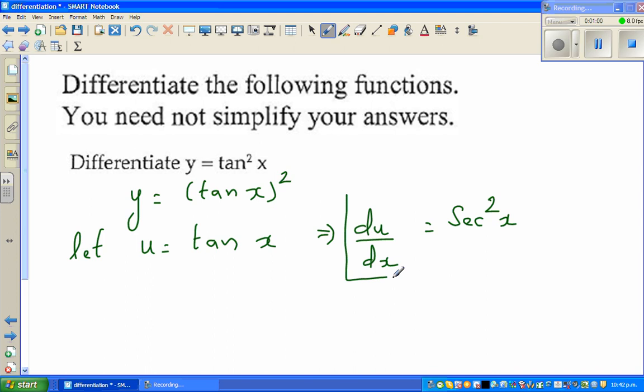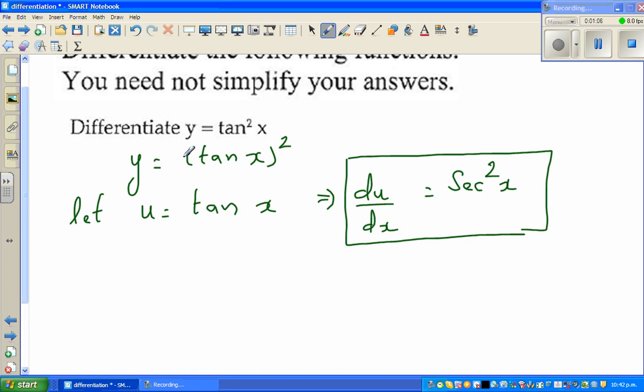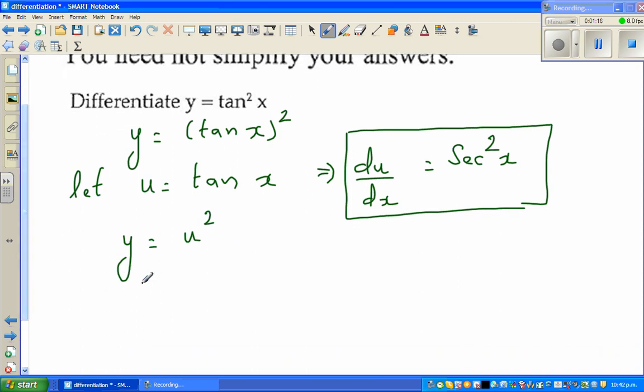I'll keep this away to be used later. Now your function has changed, y has changed into u squared. So y is a function of u. Now differentiating with respect to u, dy by du. This is a polynomial, which is 2u.